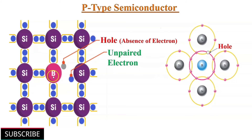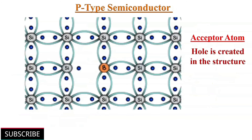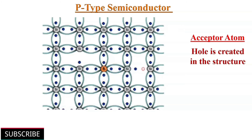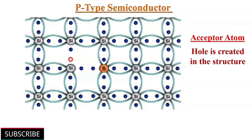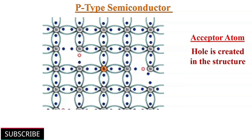For example, if a boron atom is added to silicon atoms, since boron is a trivalent atom, its three valence electrons get attached with silicon atoms to form three covalent bonds, but one electron in silicon remains without forming any bond. This vacancy is treated as a hole. Hence, every trivalent atom creates one hole, and by adding a small amount of trivalent impurities, we can create an excess amount of holes in the crystal structure. These trivalent atoms are known as acceptor atoms.